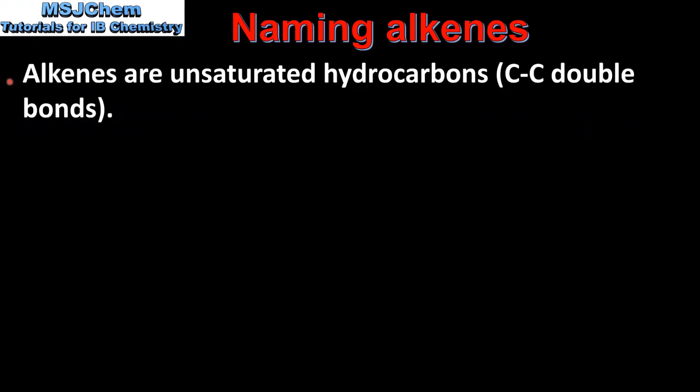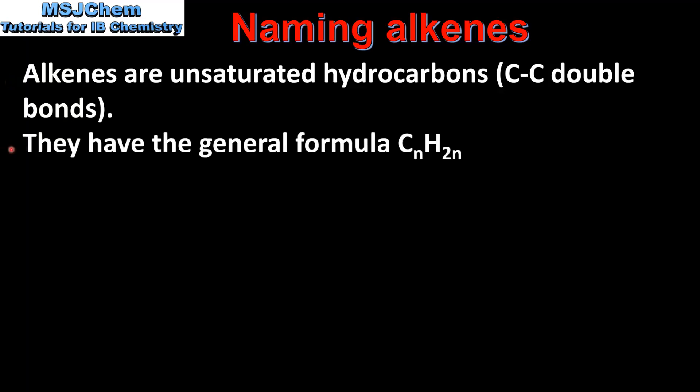Alkenes are unsaturated hydrocarbons, which means they contain carbon to carbon double bonds. They have the general formula CnH2n.